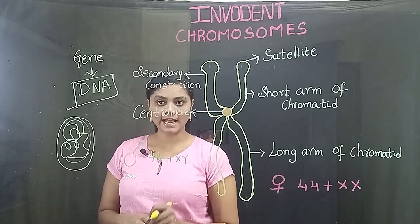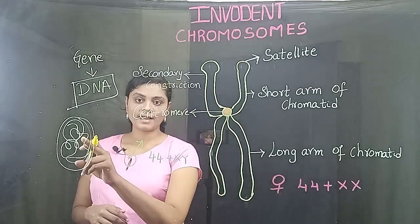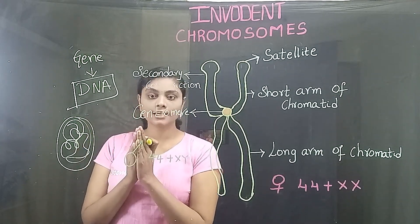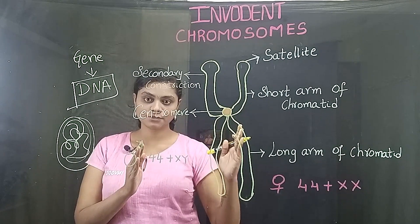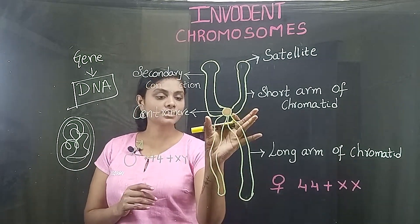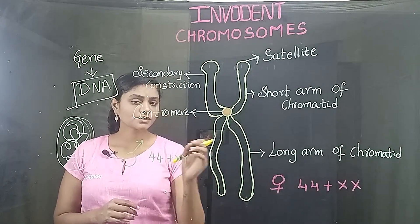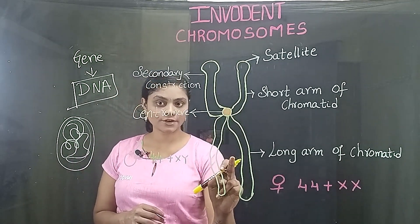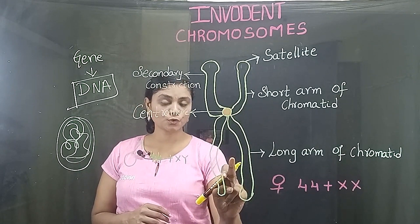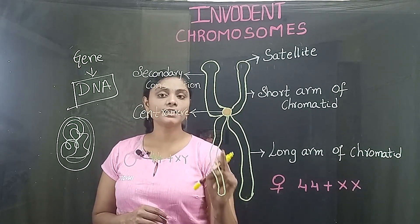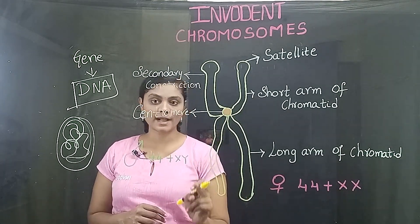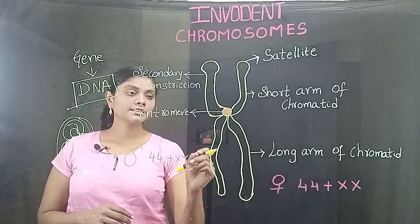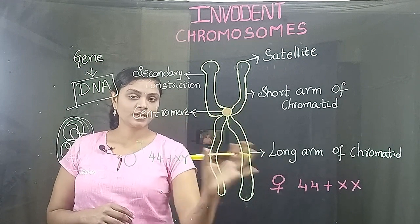During cell division, this chromatin starts condensing. It condenses further and gives a beautiful structure like this. So the chromosome structure we can see under a light microscope is the result of condensed chromatin during cell division. When chromatin is condensed, it looks like this.